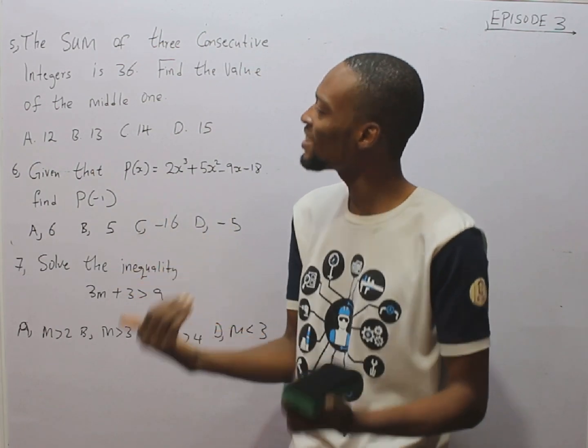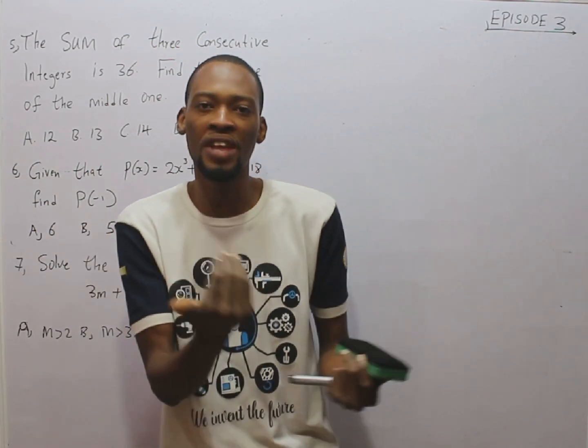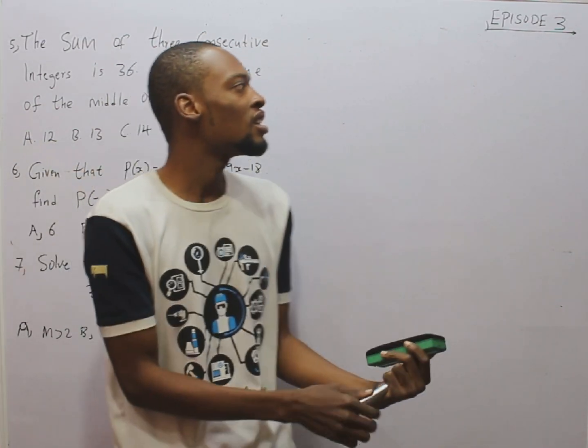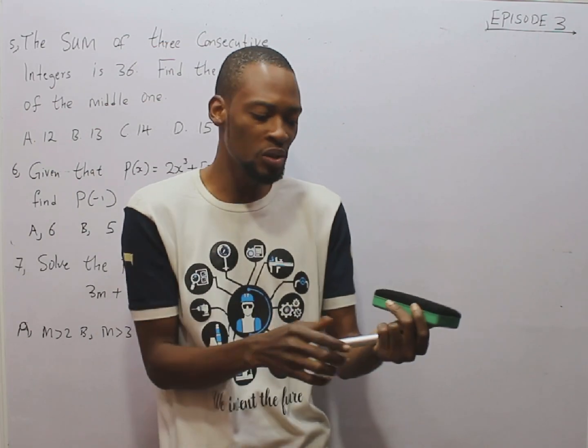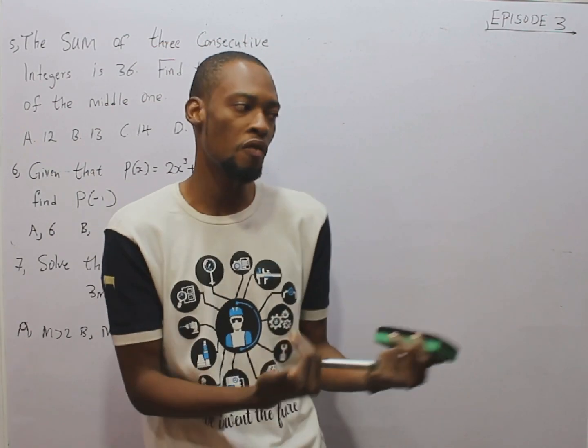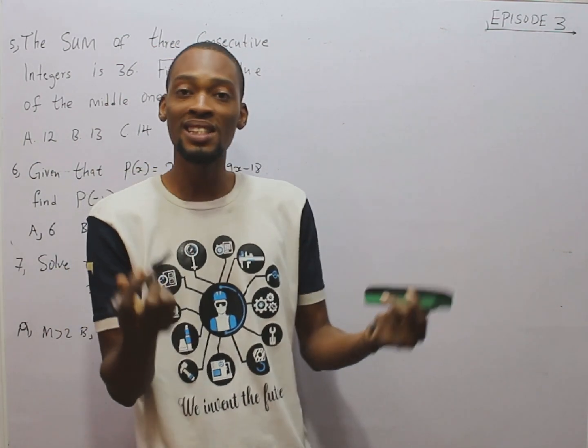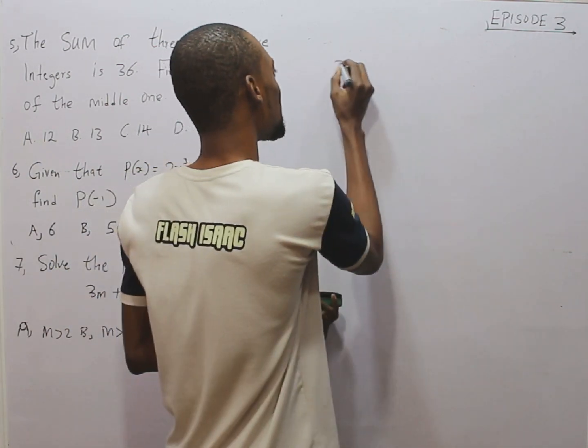Now, we don't know the integers, but we are told that they are consecutive integers. Remember, in mathematics, to find unknown, we use x, y or any letter of our choice. Now, let's say x. Let's call the first integer x. If the first one is x,